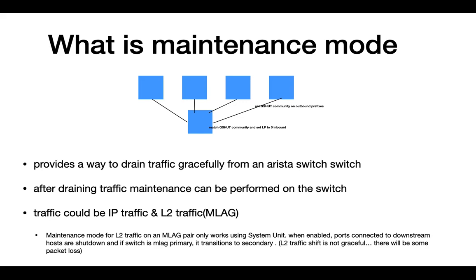Traffic could be IP or layer 2. It's important to understand that if you are using maintenance mode on a switch that is part of an MLAG pair, the way you drain layer 2 traffic is not graceful. Because when you enable maintenance mode, any ports connected to downstream hosts or downstream switches in the layer 2 domain will be shut down, and the switch will also be transitioned from primary to secondary. So if you have layer 2 on the switch as well, it's not graceful. But if you run an environment where your layer 2 broadcast domain is constrained to a single switch, then maintenance mode works great.